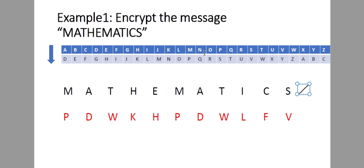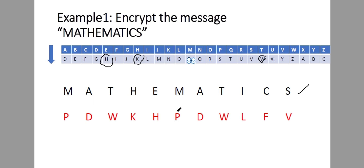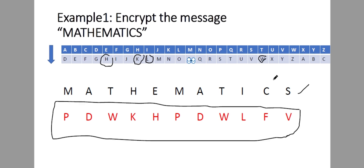Our message is 'mathematics'. To encrypt, we go from the blue to the gray. M is P, A is D, T is W, H is K, E is H, M is P, A is D, T is W, I is L, C is F, S is V. Therefore the encrypted message — the unreadable message — is: P D W K H P D W L F V.